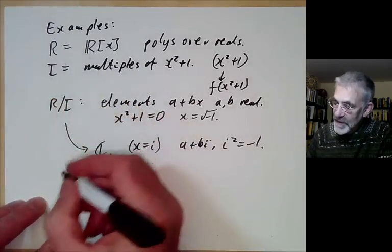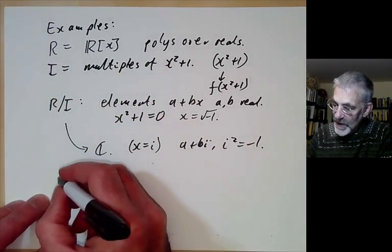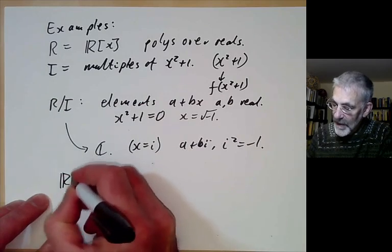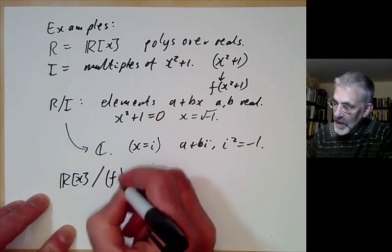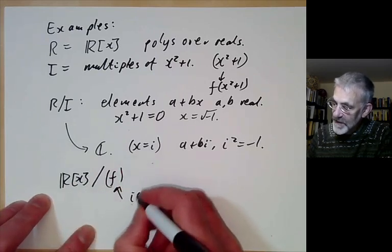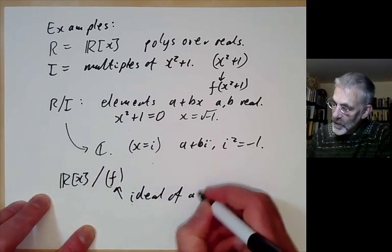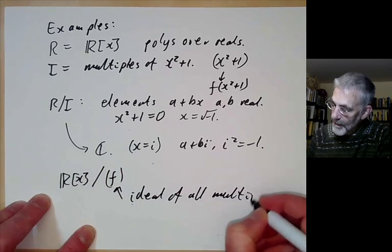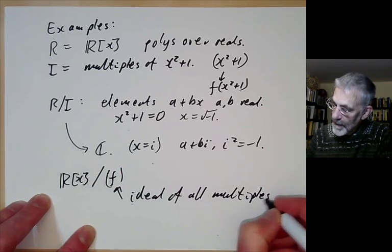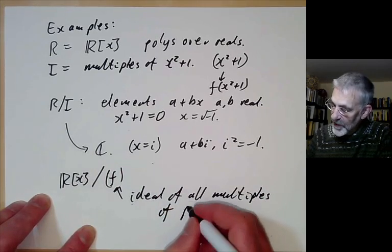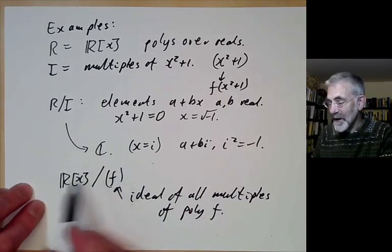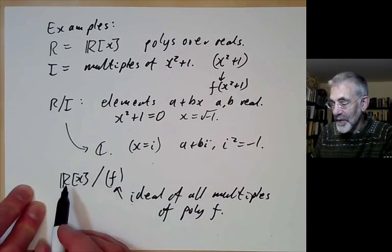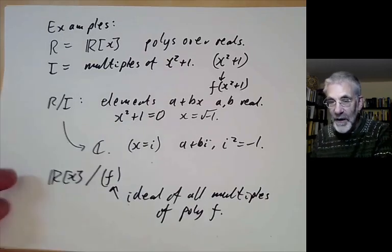More generally, we can do this with any polynomial. We take the ring of polynomials and quotient out by all multiples of f — the ideal of all multiples of f. We'll see analogues of this coming up later where we replace R by something else.